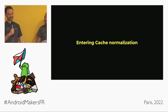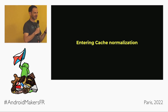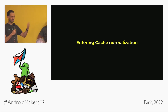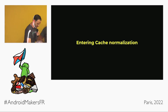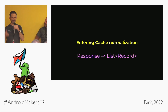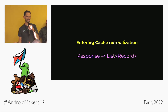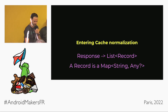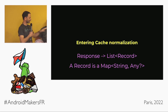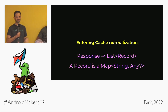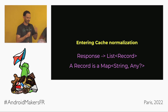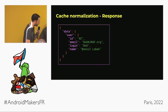In GraphQL everything is dynamic and we cannot tell in advance the full shape of an entity. So what we do is something called cache normalization. Cache normalization is the process of taking your JSON response and transforming it into a list of records. A record is really a map of string to any — don't be alarmed as a Kotlin developer, there's a good reason for this.